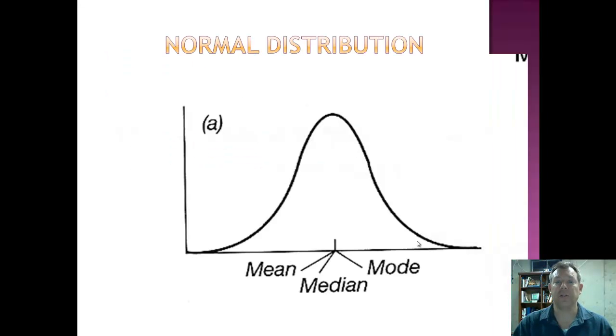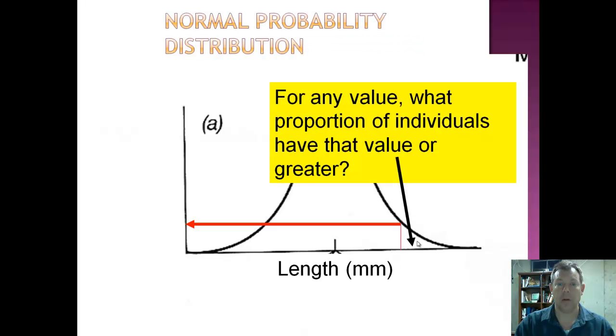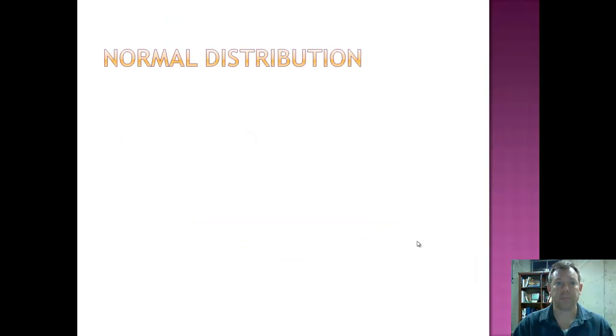And this is what a normal distribution looks like. It's an extension of our idea of a frequency histogram. And so we can say things like for any value, what proportion of the individuals have that value or greater. That's what the normal curve allows us to do. This is how we can get the probabilities that we need for hypothesis testing.